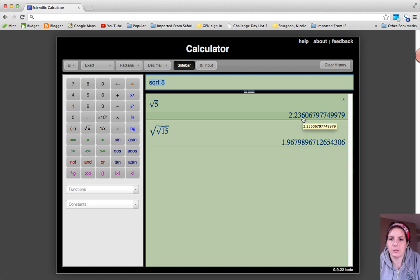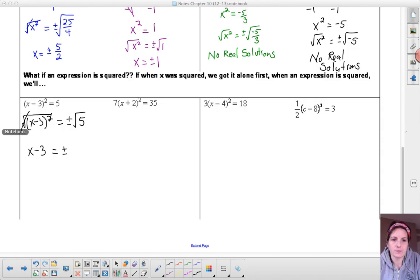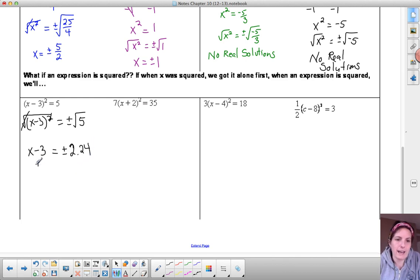And now these problems will have one extra step. We'll need to add 3 to both sides so that we end up with x is equal to 3 plus or minus 2.24. Now because that's a problem we can actually do, we need to do that and get the two answers that are involved. So when I add 3 plus 2.24,